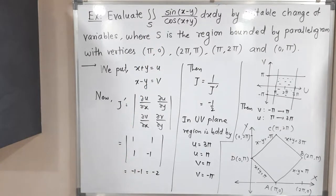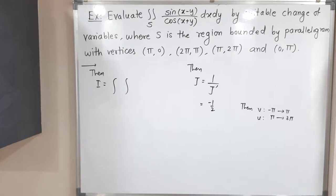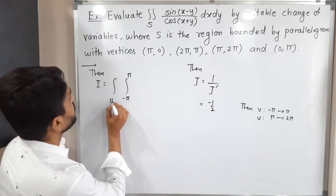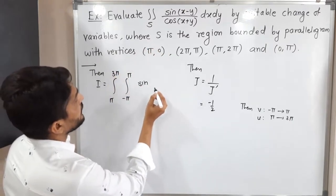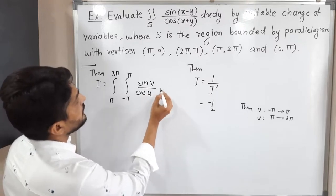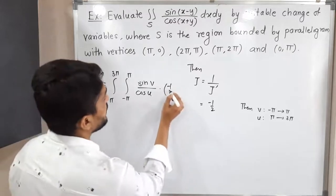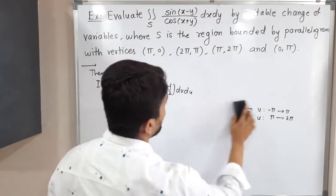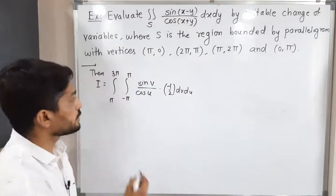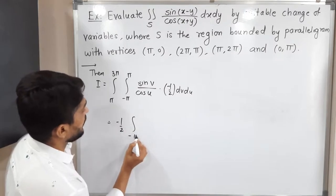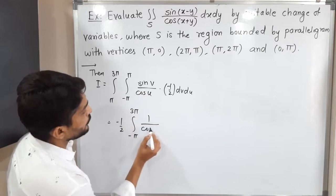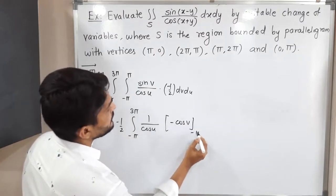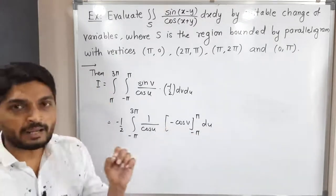Now we write the integral: (−1/2) times the double integral, with v from −π to π and u from π to 3π, of sin(v)/cos(u) dv du. Since 1/cos(u) is constant with respect to v, we integrate sin(v) with respect to v first, giving [−cos(v)] from −π to π.